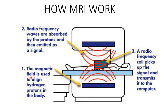How MRI works: first, the strong magnetic field is used to align the hydrogen protons in the body. Then, radio frequency waves are absorbed by the protons and emitted as a signal. The RF coil picks up the signal and transmits it to the computer. So the three steps are: charge the body with the magnetic field, switch off the field so the body releases stored energy, and then the receivers pick up that signal to reconstruct the image.